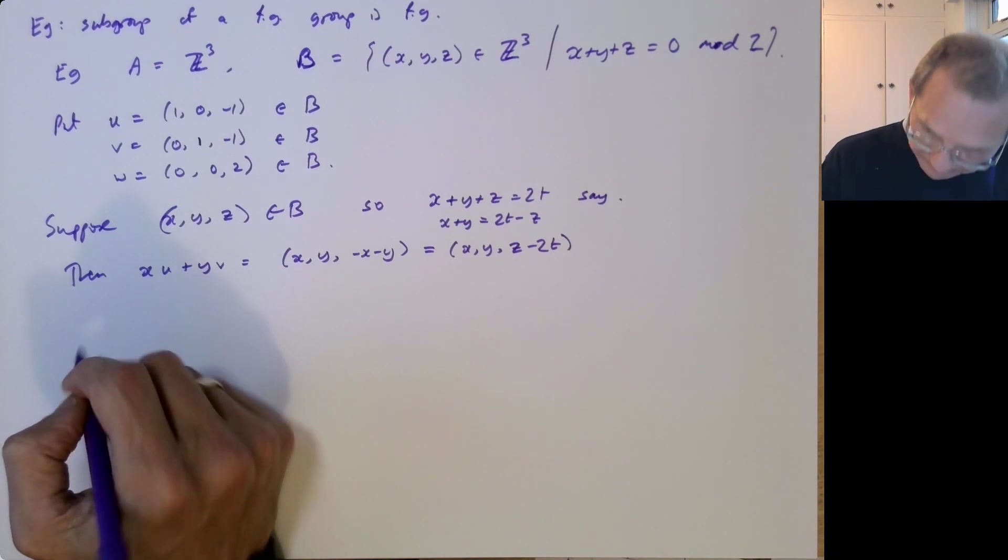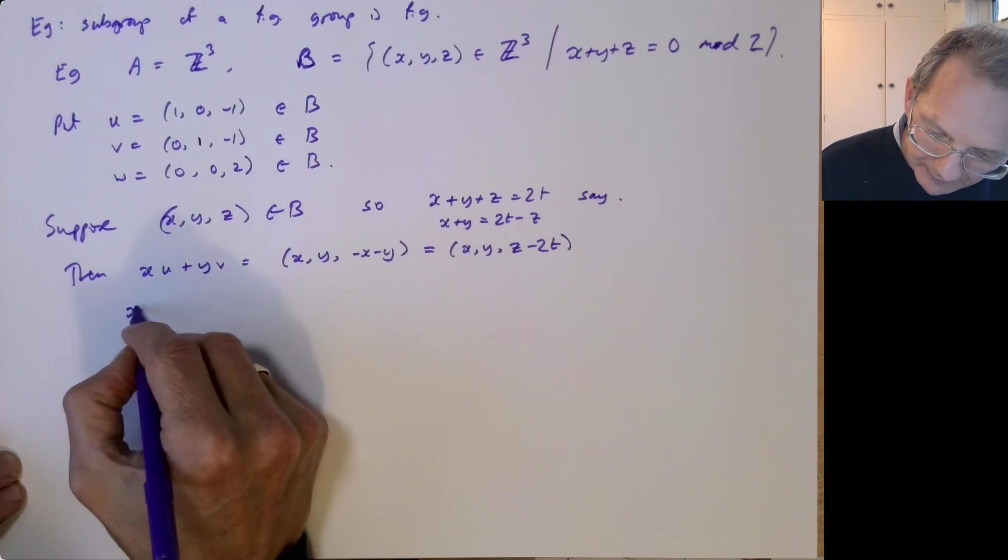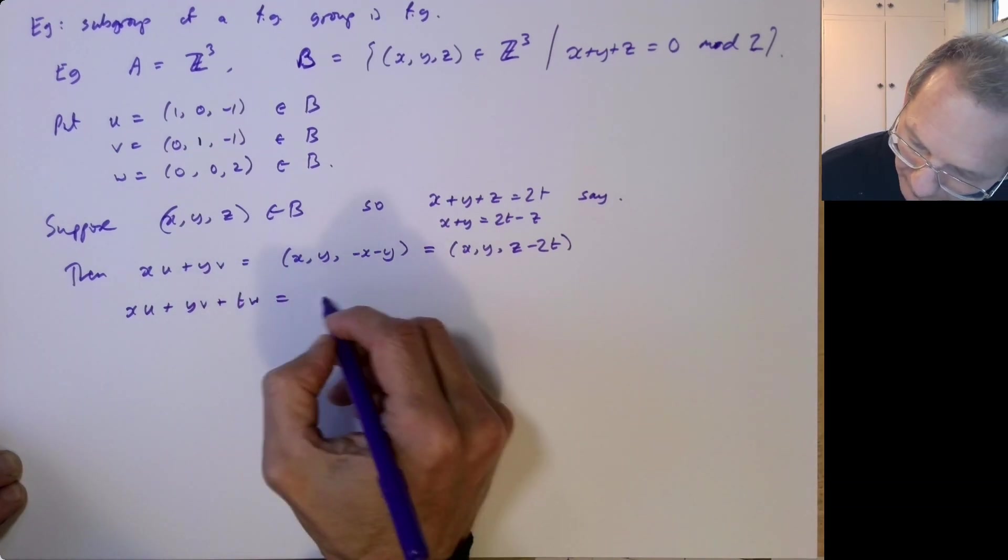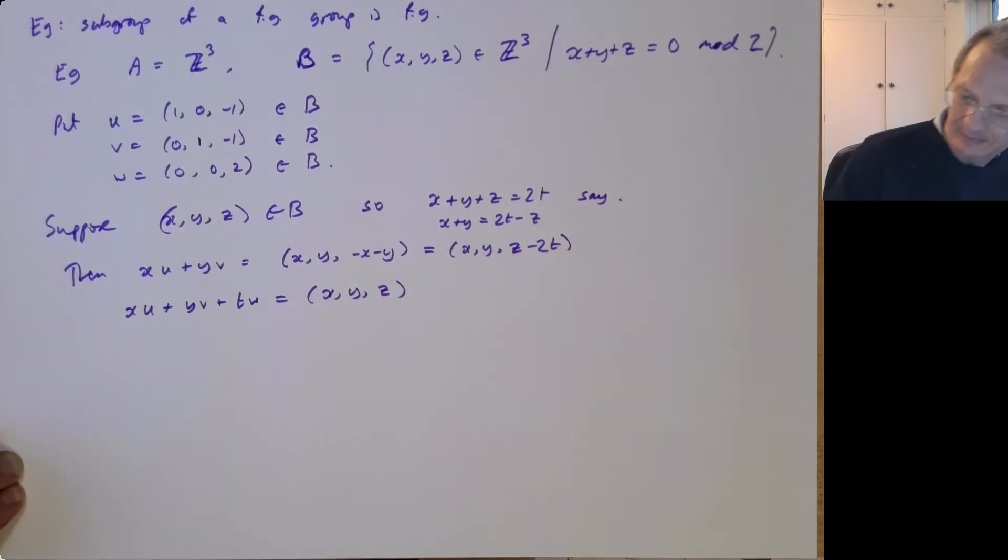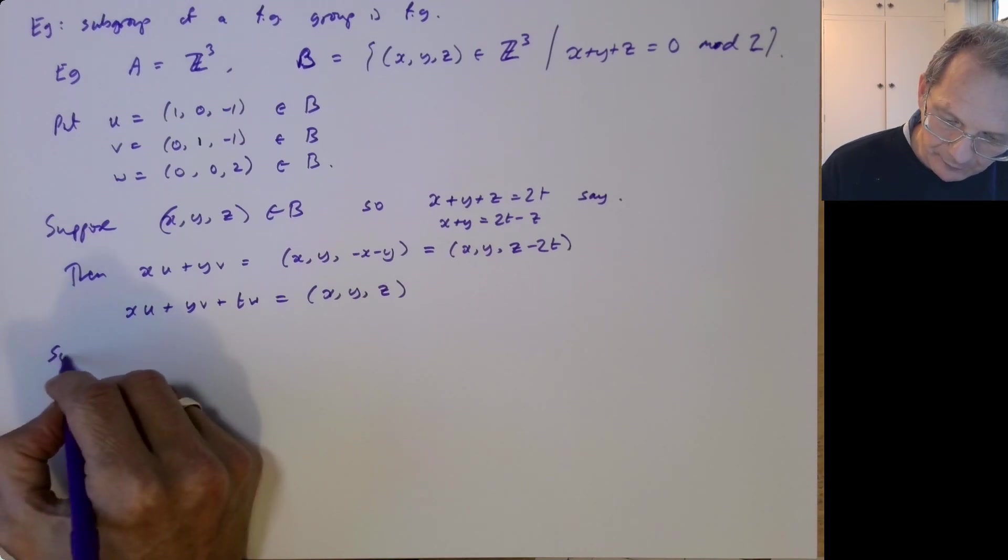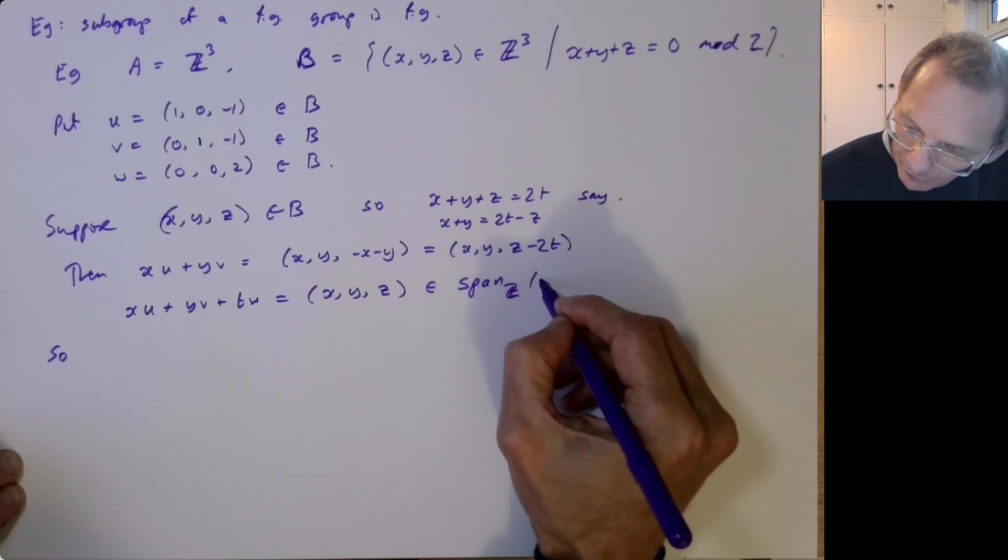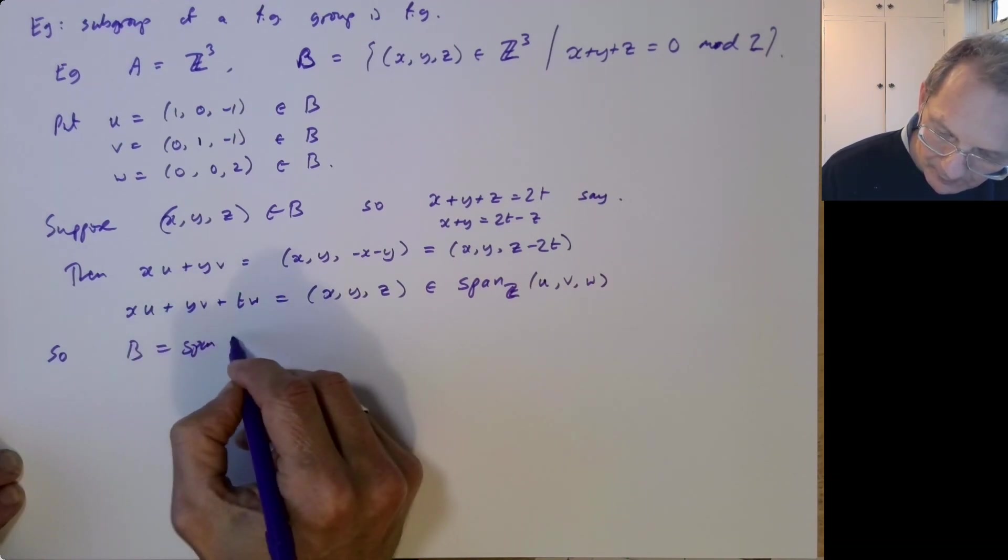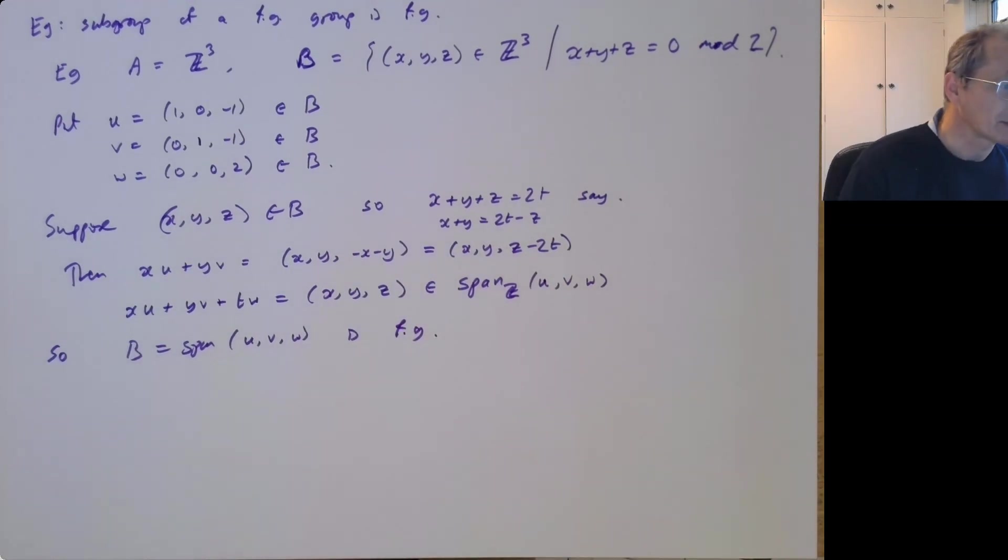And now if I add on TW, so XU plus YV plus TW, you then find that's X, Y, Z. So that's in this, so we find that this X, Y, Z, that's in the span of U, V, W.